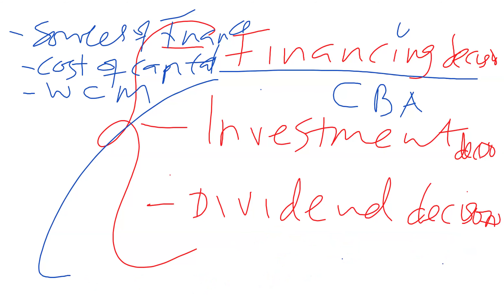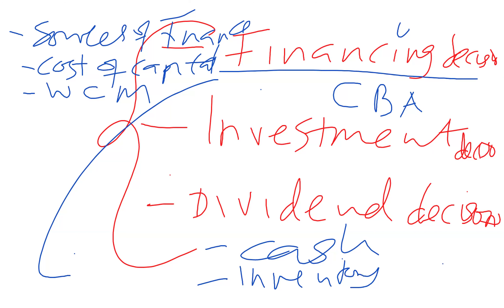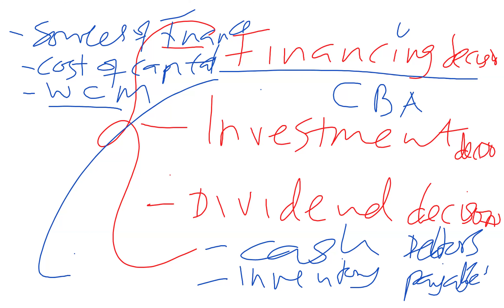Under working capital management, we look at four major components: cash, inventories, receivables (debtors), and payables (creditors). We learn how to manage cash using different models used at corporate level — those models appear in exams and questions are raised from them.